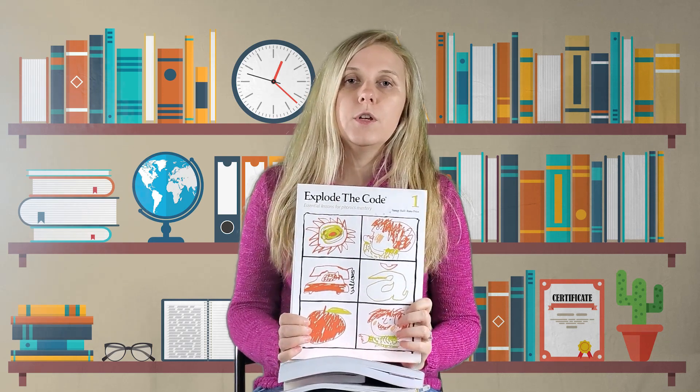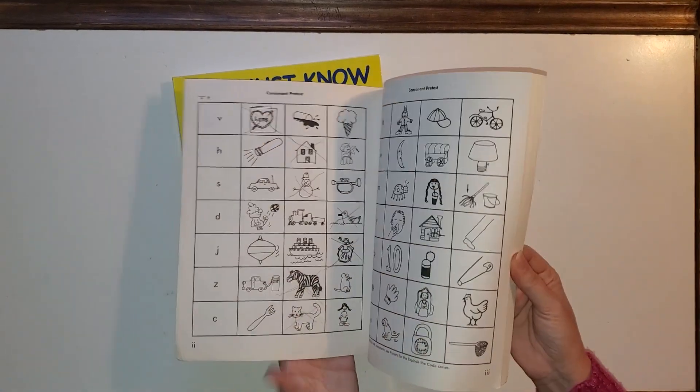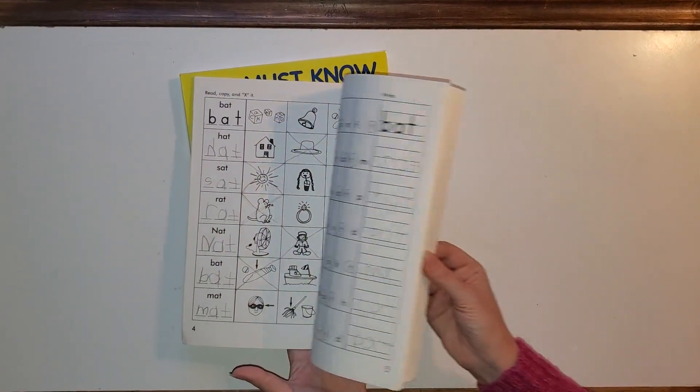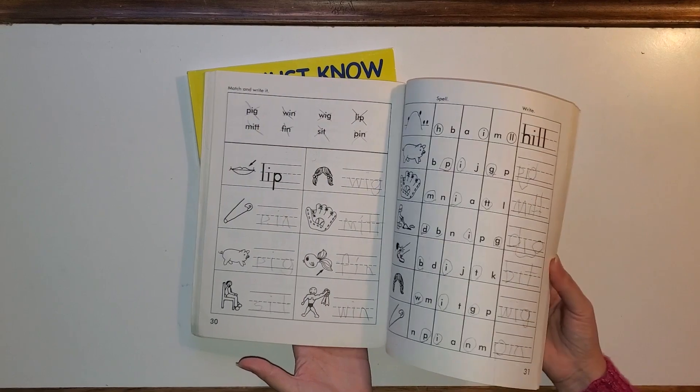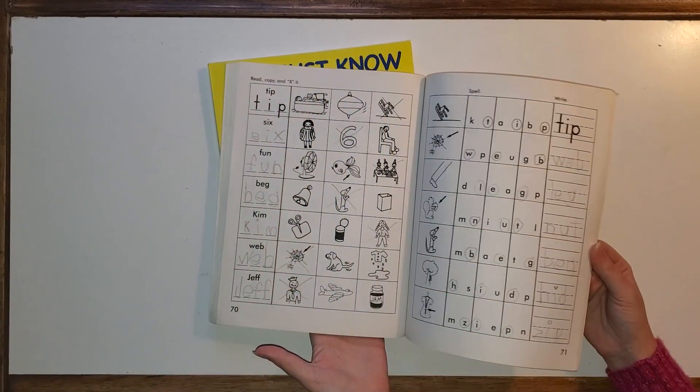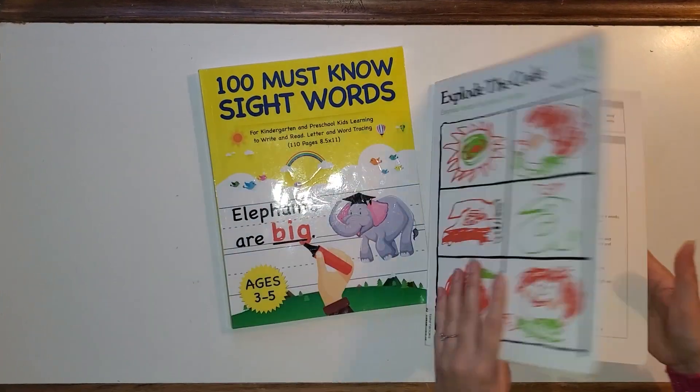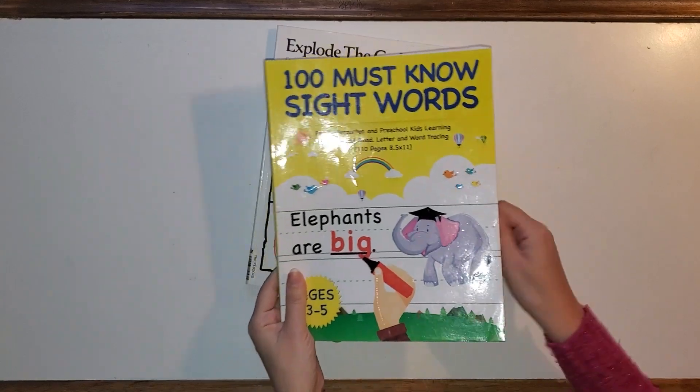Another type of workbooks that we use is Explode the Code. These are really good for learning phonics. We also don't do much. We usually do one or two pages a day. We don't finish the whole lesson every day. However, they do not take long. And they're very good for learning phonics.